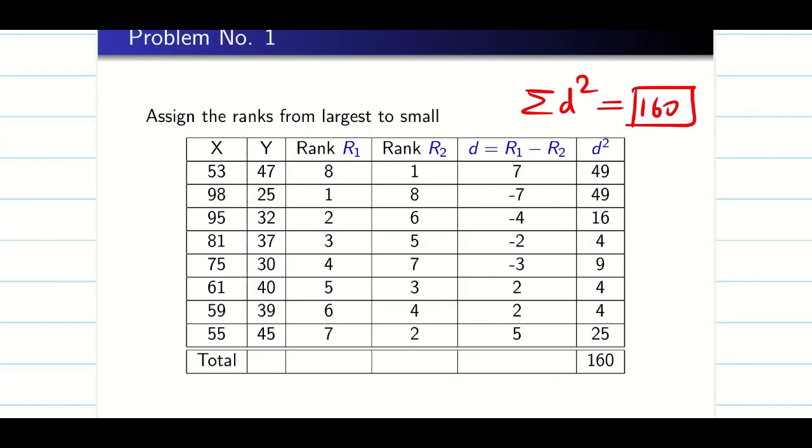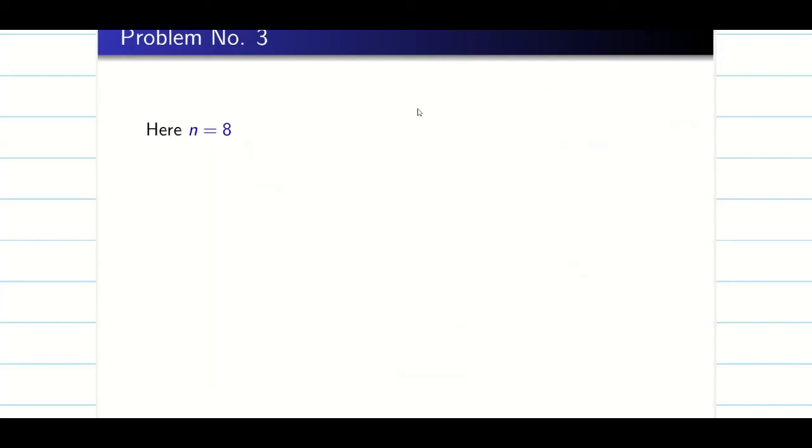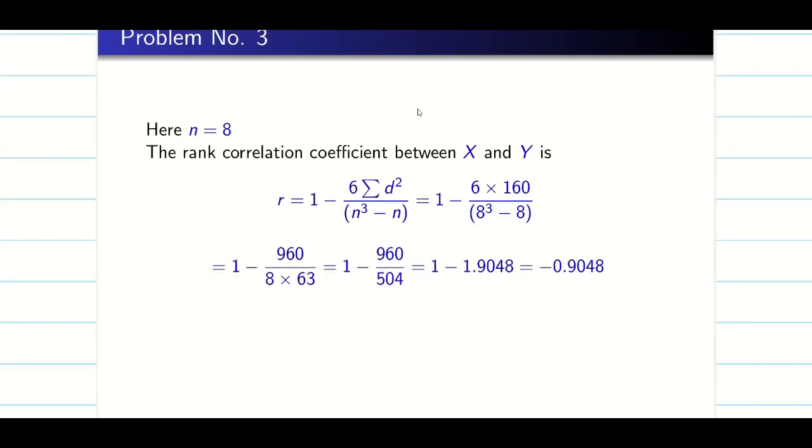So the problem is almost over here because I know summation d square. I know n is 8. Now I have to find the rank correlation. Just simply substitute the value, use your calculator, find the correlation.